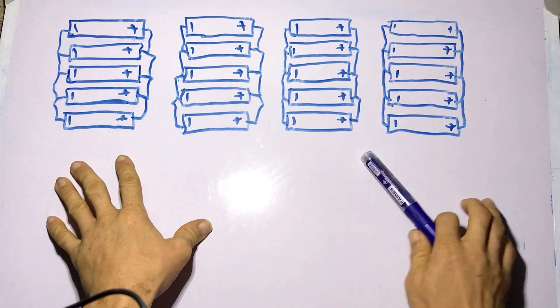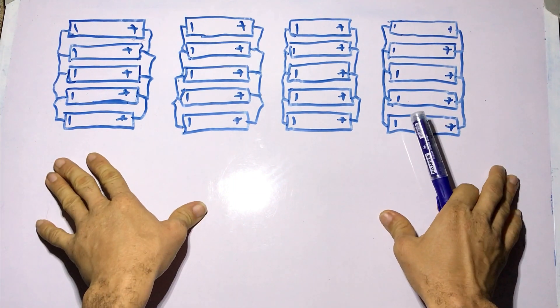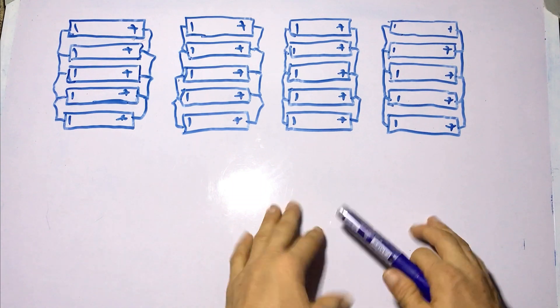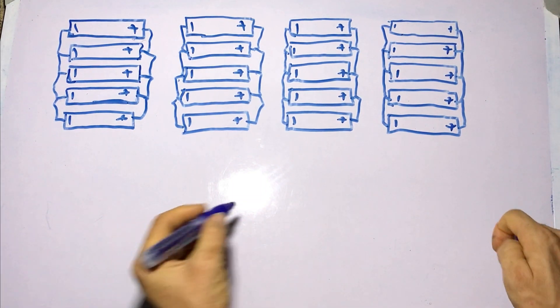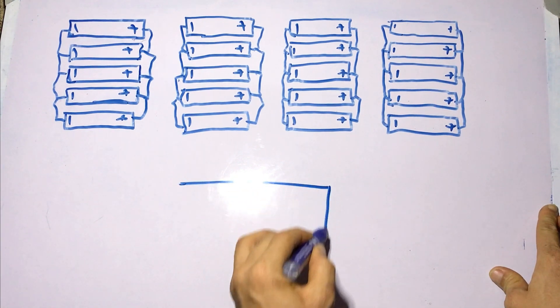To connect a BMS to a 16.8 volt lithium-ion battery, you have to understand the connections on the battery bank as well as the connections on the BMS. So for a 4S BMS, 16.8 volts in this case, this is what it looks like.